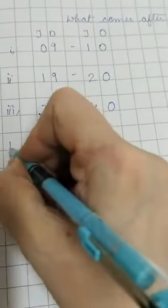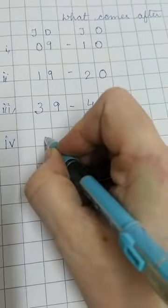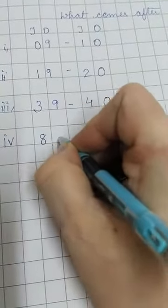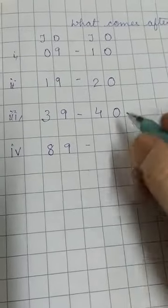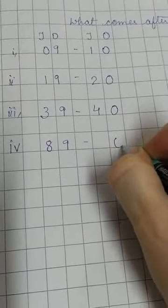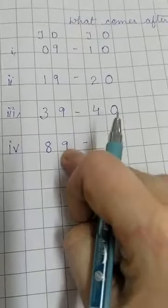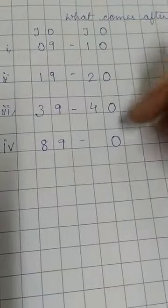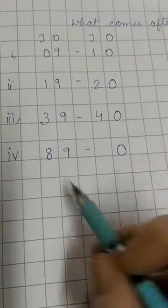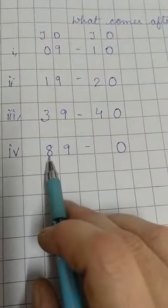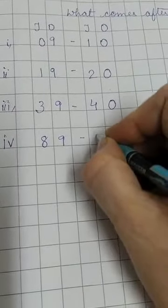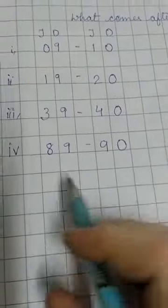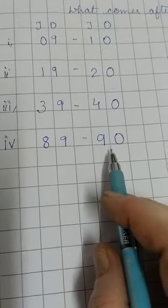Let us take 89. After 9 it will be 0, but in the 1's place only — remember, 9 is in the 1's place. So in the answer in the 1's place you will write 0, and to the left of 9 is 8, so we will write 9. What comes after 89? It is 90.